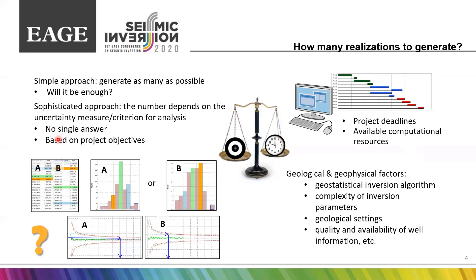We can use a different approach and start from analyzing project objectives. The more useful way to state this question is: how many realizations are needed to achieve a requested level of uncertainty or acceptable level of accuracy for the selected criterion? It also means that depending on the selected criterion, the minimum number of realizations can change.